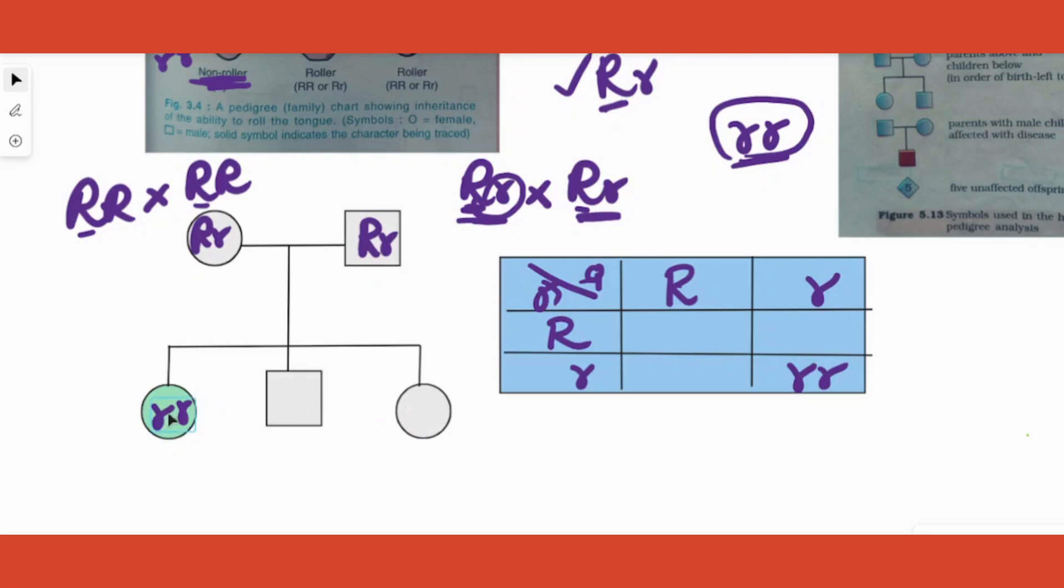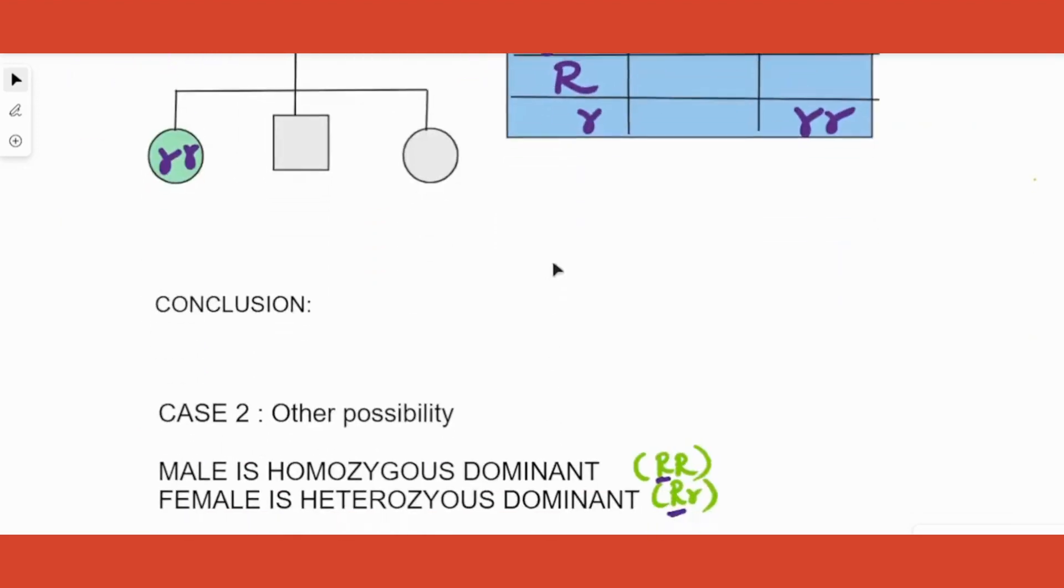So if you get a question that one of the progeny for two tongue rolling parents is non-tongue roller like this, what is the possibility of the genotype of the parents? You can without even thinking write they are heterozygous dominant.